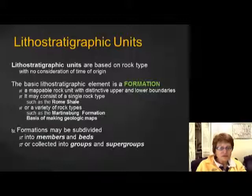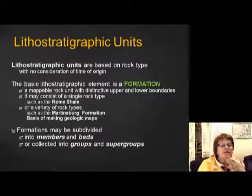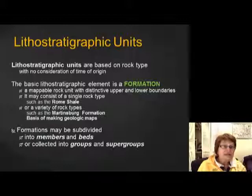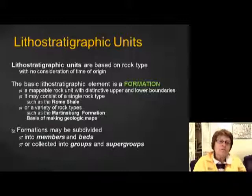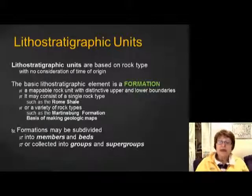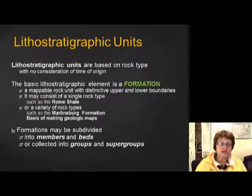Or a formation could have a variety of rock types, such as the Martinsburg Formation — when we go to Catoctin, I will show you the Martinsburg Formation, which can have limestone layers, mostly silt, and some shale. Formations are the basis for making geology maps — the basic map units are formations. Very many times a formation can be subdivided into members and beds, and they could also be collected into groups and supergroups. I'm going to stop here, and I will have one more segment for this chapter.